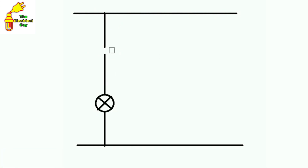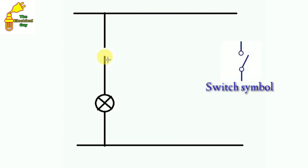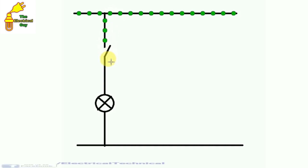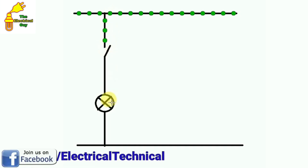In series with this bulb, connect a switch. Here we are going to connect a switch — this is the symbol of a switch. Now if the power supply remains on, then till here only it will be supplied; it cannot flow further from here because a switch is connected here.